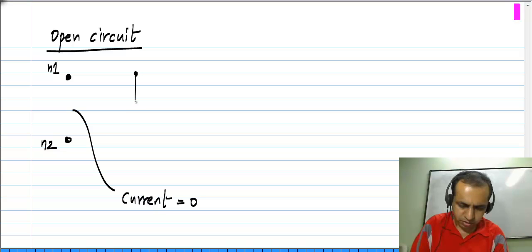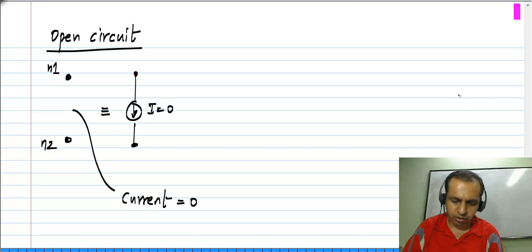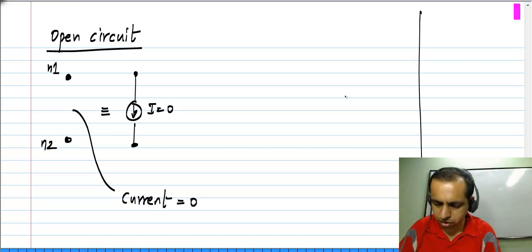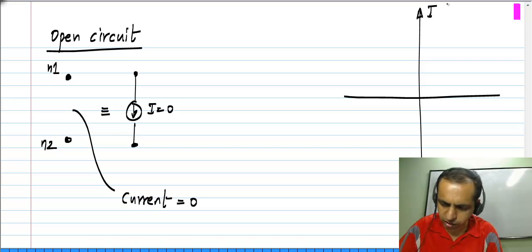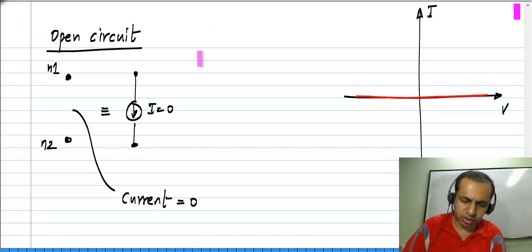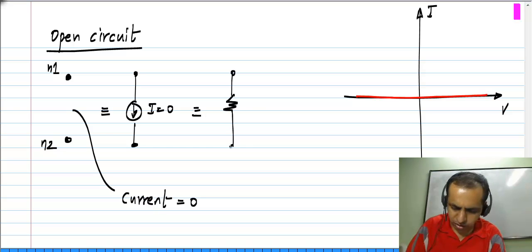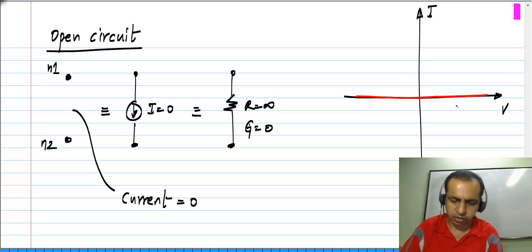What does this mean? You can equivalently represent it with a 0 current source, because if current is 0 and I draw the I-V characteristic of it, I will have a horizontal line passing through the origin, that corresponds to I equals 0. That is a 0 valued current source, which is also equivalent to an infinite valued resistance or 0 valued conductance.